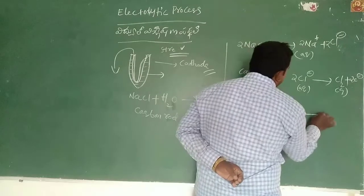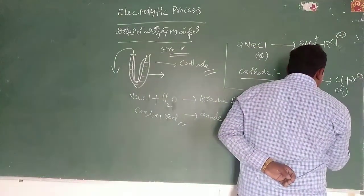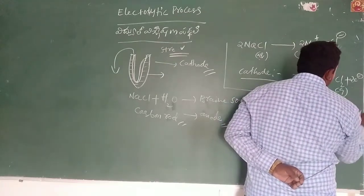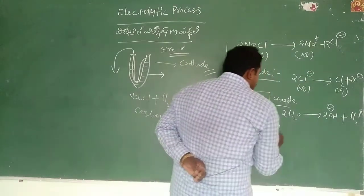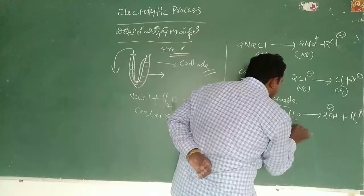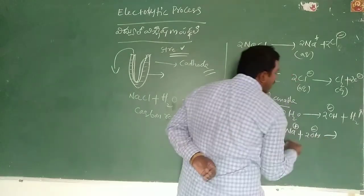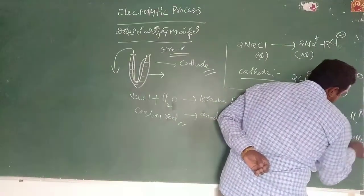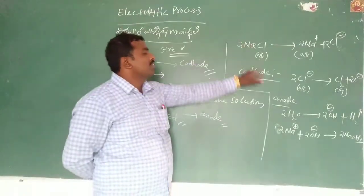At the anode, two moles of water molecules give two moles of OH plus H2. And at the anode, two moles of sodium hydroxide are formed. This is how sodium hydroxide is formed. This is the electrolysis process.